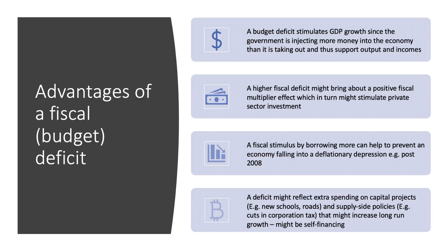The second advantage is that a fiscal deficit can bring about a positive fiscal multiplier effect — the final change in national income might be bigger than the increase in government spending and borrowing. That in turn could stimulate private sector investment; there could be a kick-start to investment in housing, car making, or steel — there could be an accelerator effect.